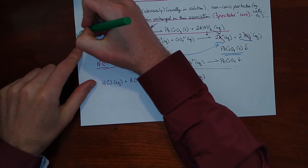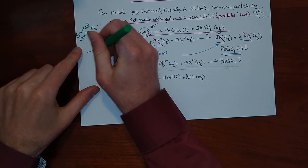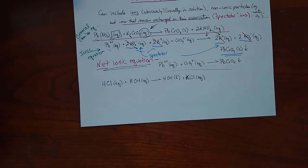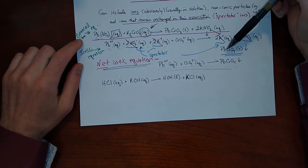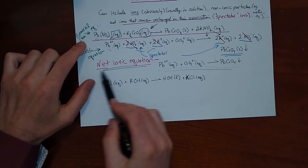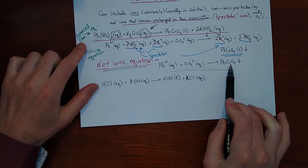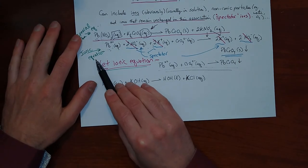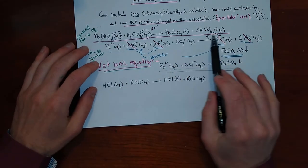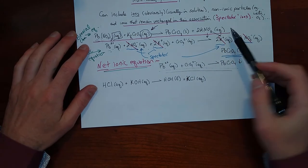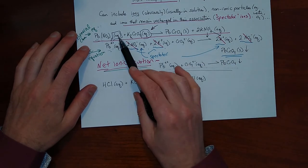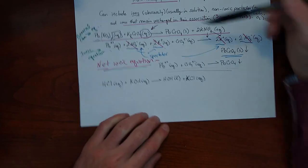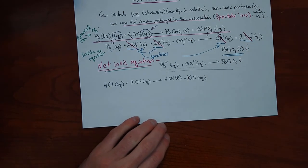So we now have three types of equations: the general chemical equation, the complete ionic equation, and the net ionic equation. You use different forms depending on what you're interested in. If you're only interested in the net process, use the net ionic equation. If you want to clearly see all ions in solution, use the complete ionic equation. If you're looking at the big picture — the amounts of elements involved or the mass needed — you can just use the general chemical equation. They all represent the same reaction in different ways.